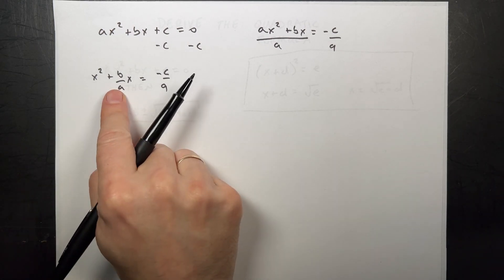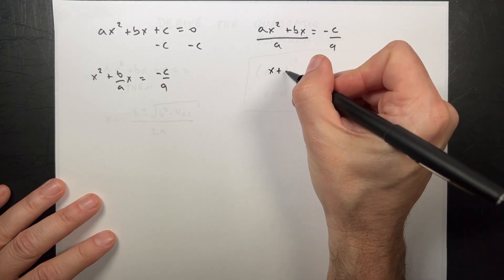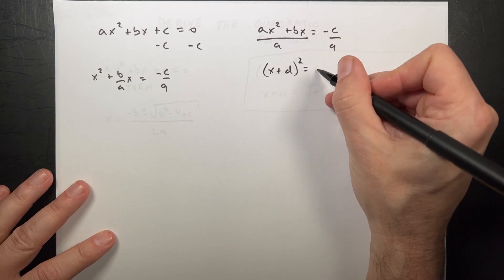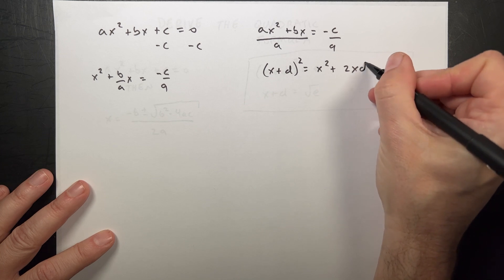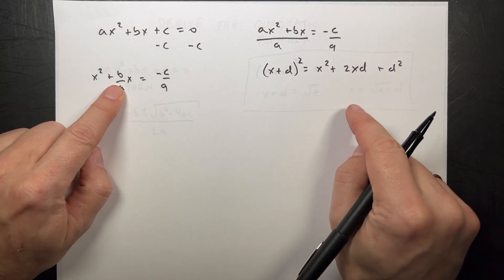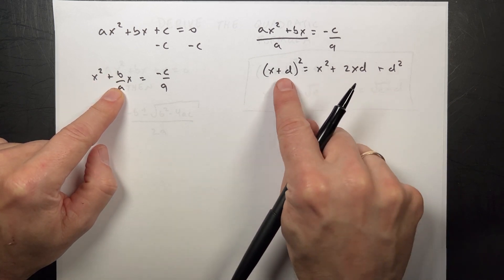Now I want to turn this into a perfect square. Think about this. If I had x plus d quantity squared where d is some constant, that's going to be x squared plus 2xd plus d squared. And so right here I have the x term, and I want this b over a to be twice that.